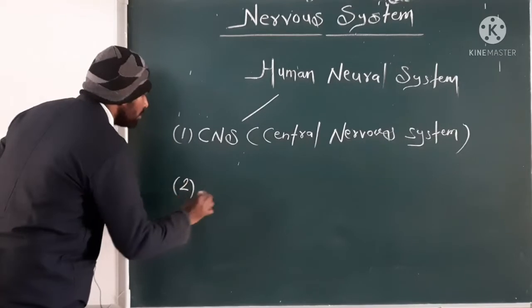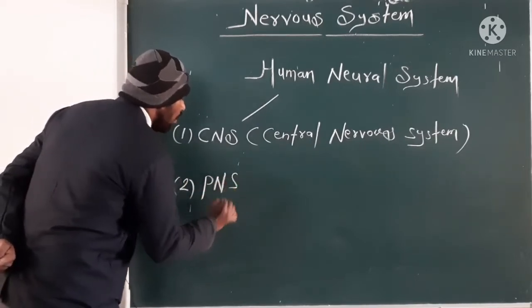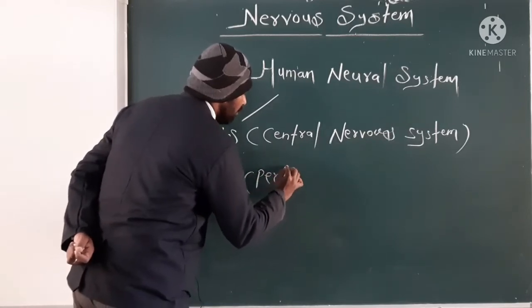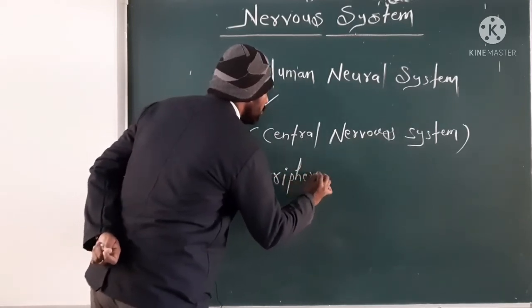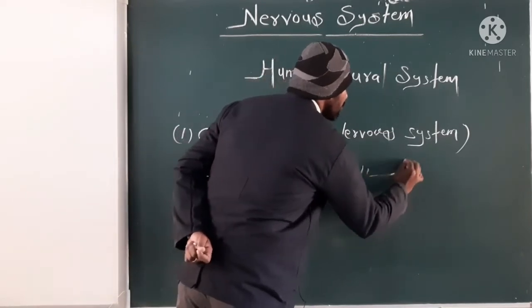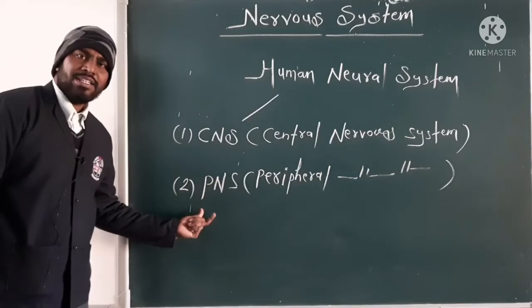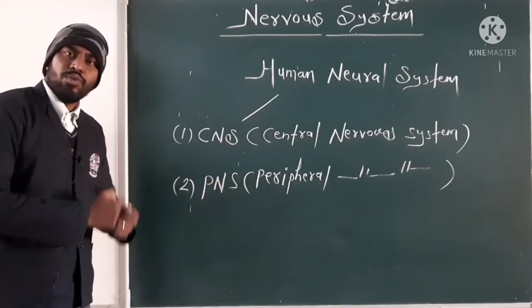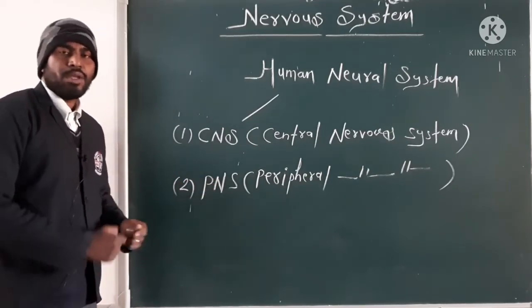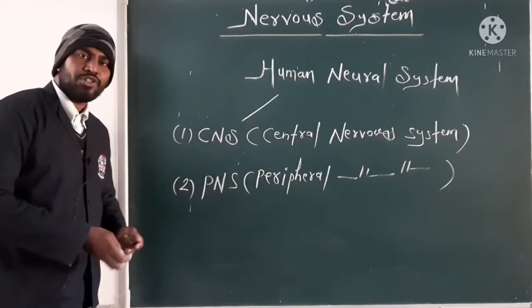The second part is called PNS, or peripheral nervous system. PNS can be defined as the kind of nervous system which works and performs its action between the spinal cord and other body organs and tissues.